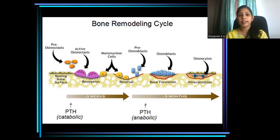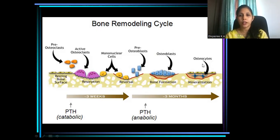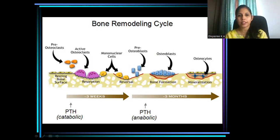Osteocytes are the resting osteoblasts. They are cells residing within lacunous spaces within the alveolar bone. Depending upon the stimulus received, osteocytes transform into either osteoblasts for bone formation or into osteoclasts, which are multinucleated cells, for bone resorption.